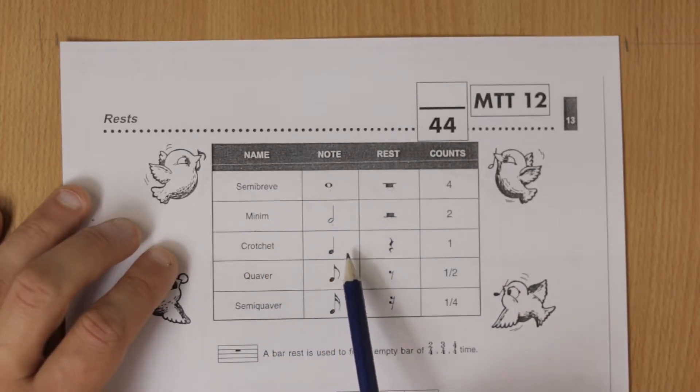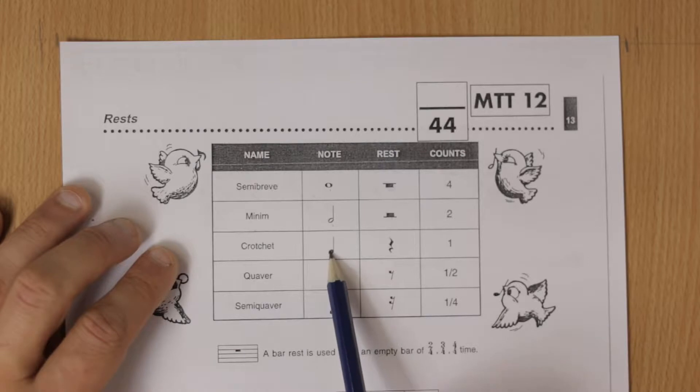A crotchet is worth one beat. The crotchet note looks like that and the rest for silence is that.